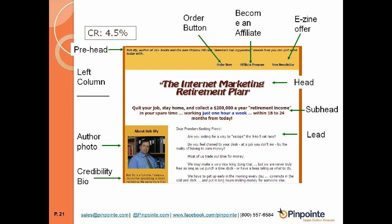Putting the credibility factor up front is important because on the internet you only see the beginning of copy on the first screen. In the banner, there are also three buttons: one to order now, one to sign up as an affiliate, and one to sign up for a free newsletter — so if they don't buy, you still capture their email. Having an order button at the very top is proven to increase response, because some people glance at a page for two seconds, decide they want it, and you shouldn't make them scroll down to find the order button.